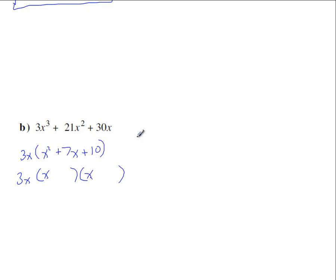And for the number terms, we need to find something that multiplies to 10 and adds to 7. So they'll both be positive. Just by thinking about it, I can guess 2 times 5. 2 times 5 is 10 and 2 plus 5 is 7. So plus 2 and plus 5.